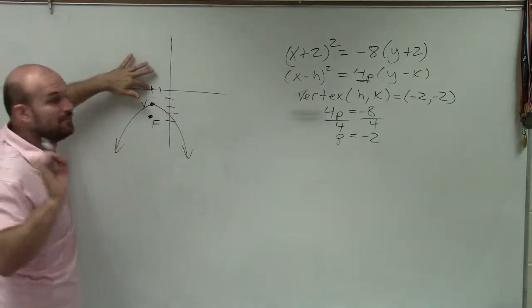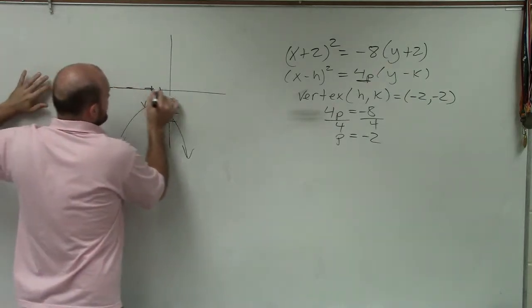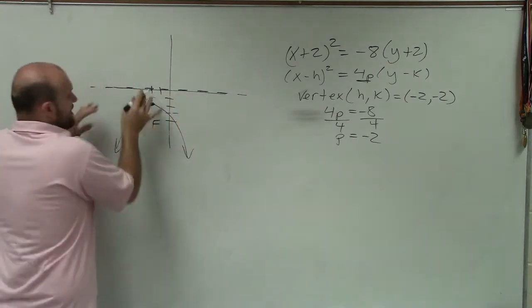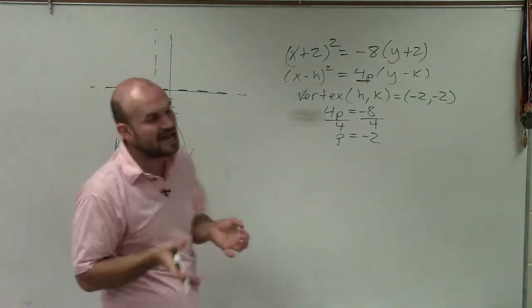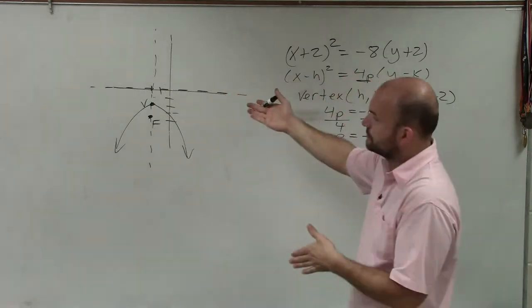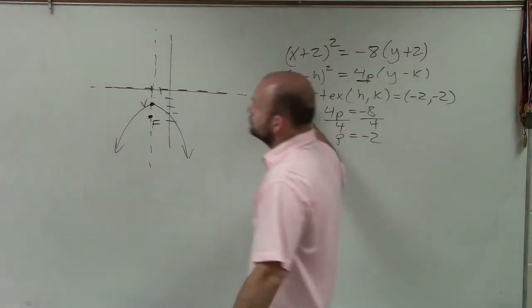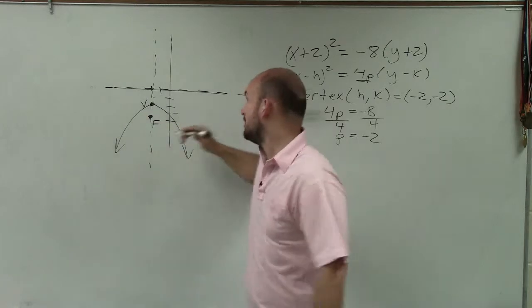But the directrix is not a point. The directrix is a line. And that line is perpendicular to the axis of symmetry. And you can see the axis of symmetry of this parabola is vertical. Remember, it has to go through your vertex and your focus. But the directrix is the perpendicular line.